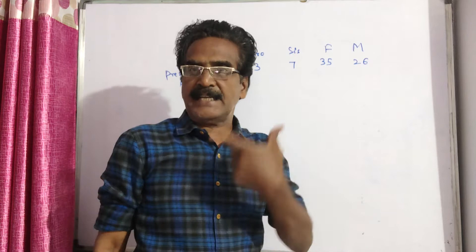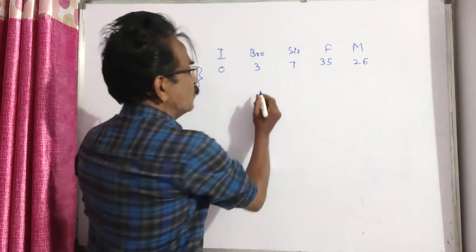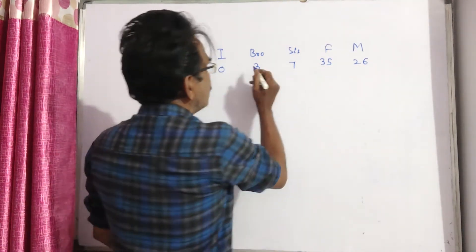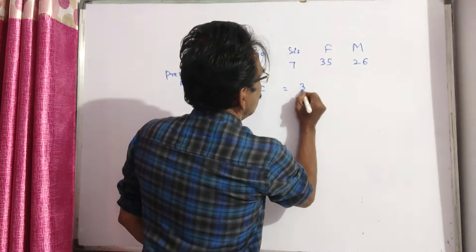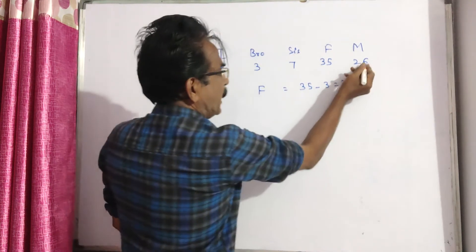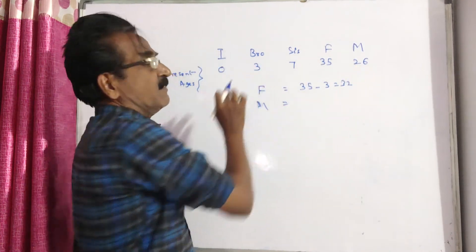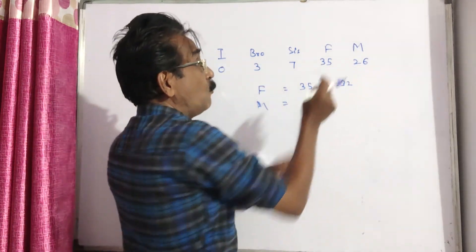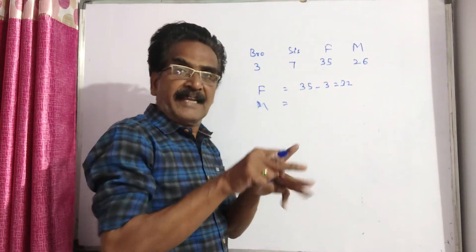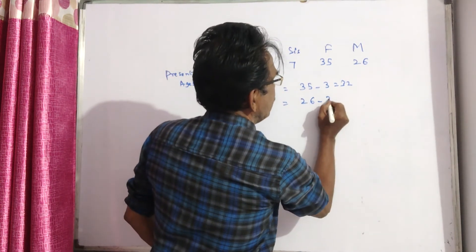The question is: what are the ages of father and mother when my brother was born? Father's age when brother was born: 35 minus 3 equals 32. Mother's age when brother was born: mother is now 26 and brother is 3, so 26 minus 3 equals 23 years.